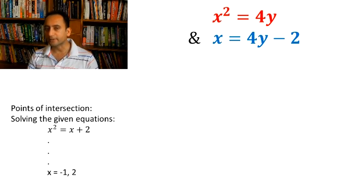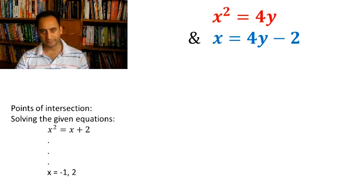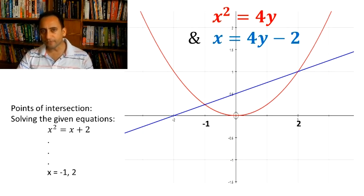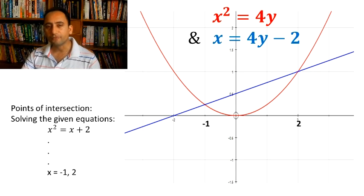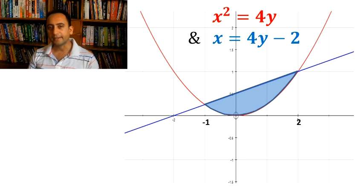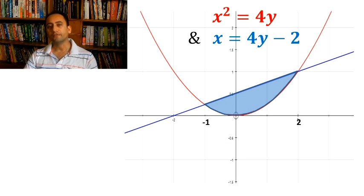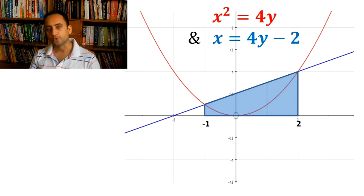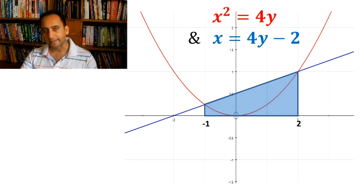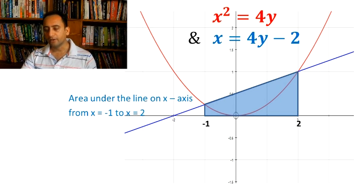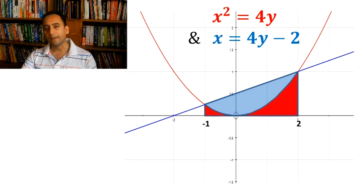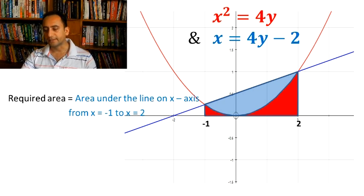Let us plot the graphs of these two functions — here are the graphs. What we need to find is the area of the shaded region. This area can be obtained by finding the area under the straight line from x = -1 to x = 2, then subtracting the area under the parabola from x = -1 to x = 2. We will obtain the answer.